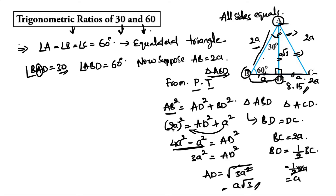We now have all three sides of the right angle triangle: AB = 2a, BD = a, and AD = a√3.